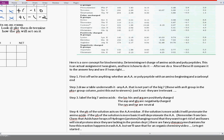Here is a core concept for biochemistry: determining net charge of amino acids and polypeptides. This is an actual assignment I was given, and here's how to do it. After we do a few of these, I'll compare it to the answer key and see if I was right.